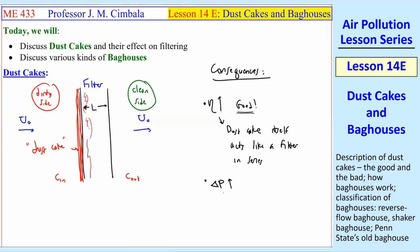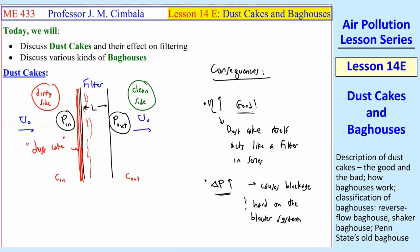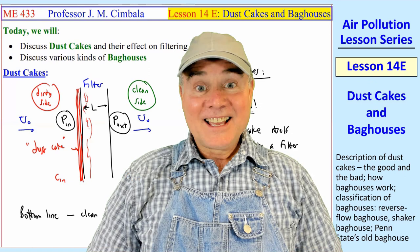Well, the bad news is that delta P also goes up. If we call P-in the pressure upstream and P-out the pressure downstream of the filter, this dust cake can really increase that delta P. That causes blockage, and it's hard on the blower system in your ducts and things like that.